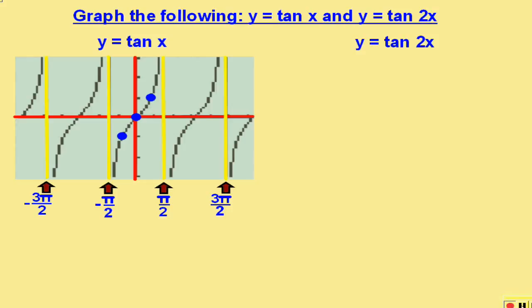We may notice that the period for tangent is just pi. Since the graphs go on to positive infinity and negative infinity, there is no amplitude for tangent.